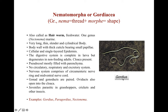Here is the example of Gordiasia — you can see the very thin, very long, slender and cylindrical body of the animal. The body wall has a thick cuticle, and it possesses some papillae. The epidermis is cellular and single-layered. The digestive system is complete in larvae but degenerates in non-feeding adults. The cloaca is also present.